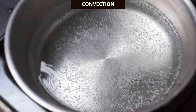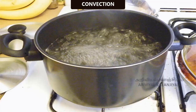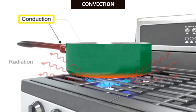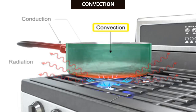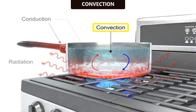Now, let's see about convection. Let's take some water in a vessel and heat it on a stove. Touch the surface of the water — it will be cool. Touch it after some time — it will be hot now. How did the heat which was supplied at the bottom reach the top? When water in the vessel is heated, water molecules at the bottom receive heat energy and move upward. Then molecules at the top come down and get heated. This kind of heat transfer is known as convection.